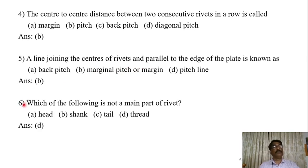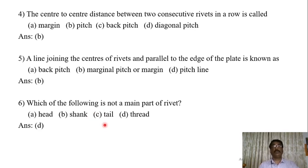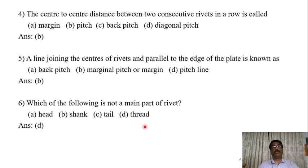The sixth question: which of the following is not a main part of a rivet — head, shank, tail, or thread? The answer is D: thread. Thread is not a main part of a rivet. The three main parts are shank, head, and tail. Thread belongs to screwed fasteners, not rivets.